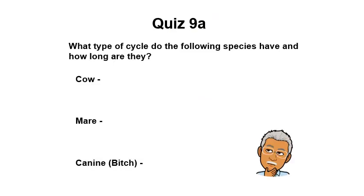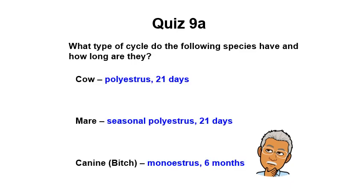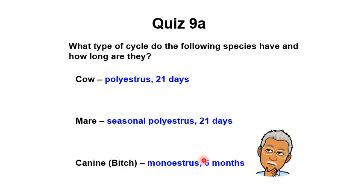For a recap quiz: what type of cycle do the cow, mare, and bitch have, and how long are they? The cow is a polyestrous animal that exhibits estrus all year round with a 21-day estrous cycle. The mare is seasonally polyestrous — a long-day breeder — with a 21-day estrous cycle. The canine is a monoestrous animal, exhibiting estrus about once or twice a year, with a cycle of about six months.